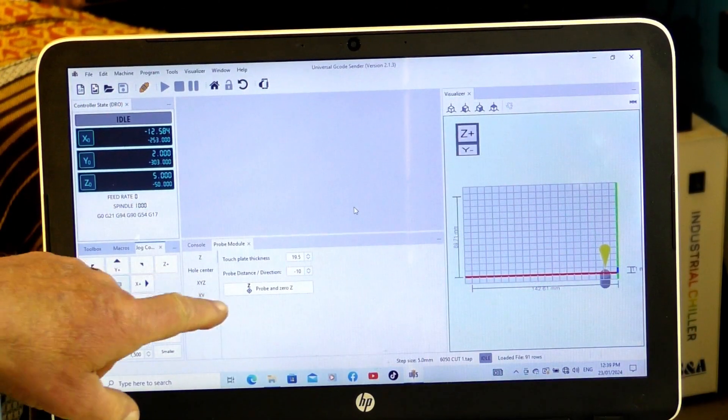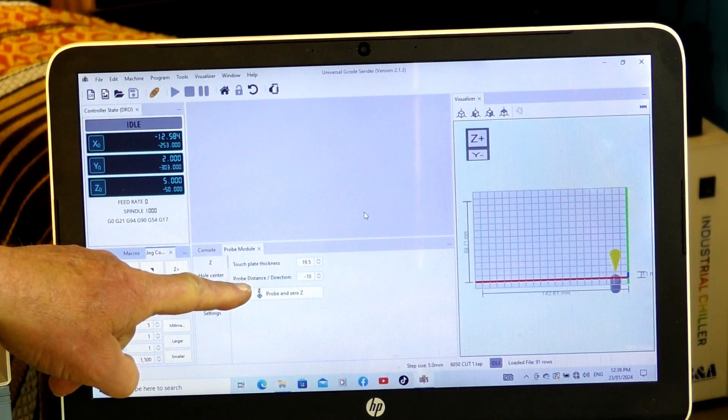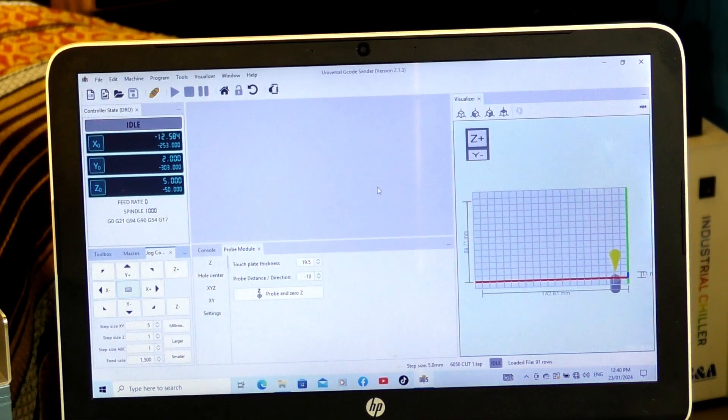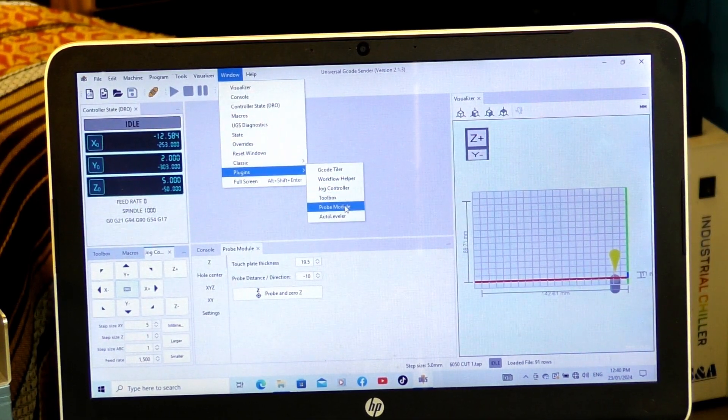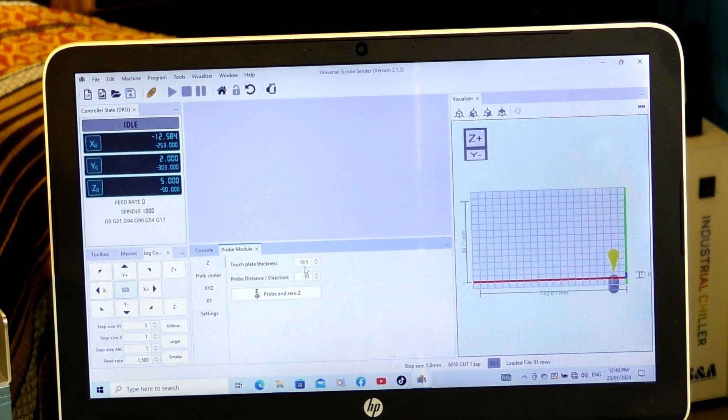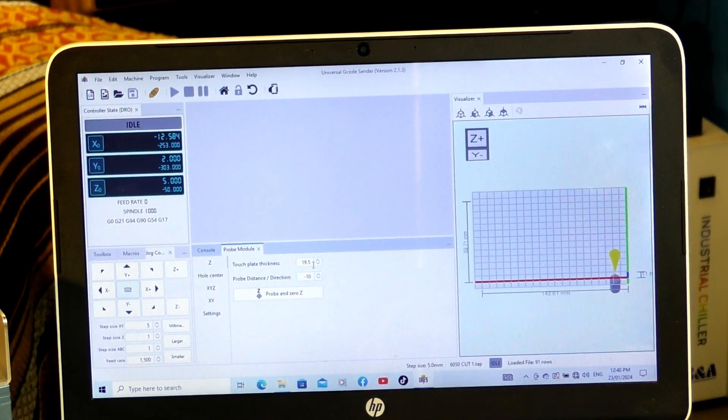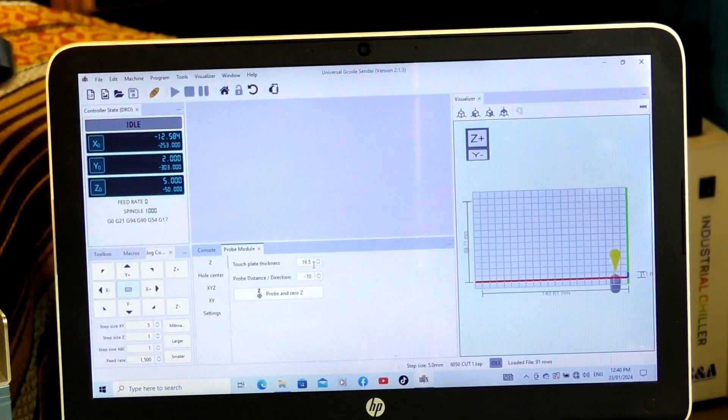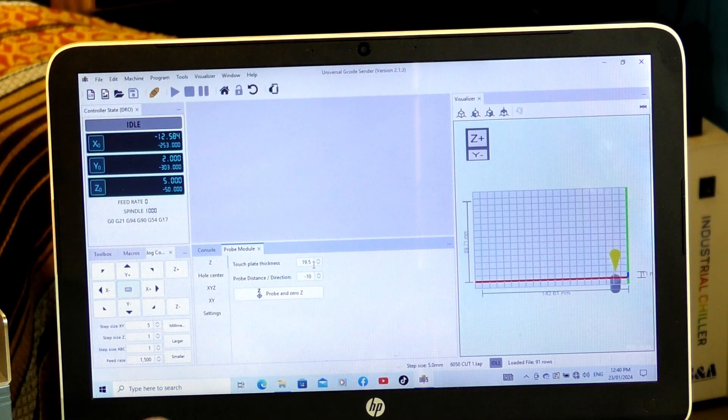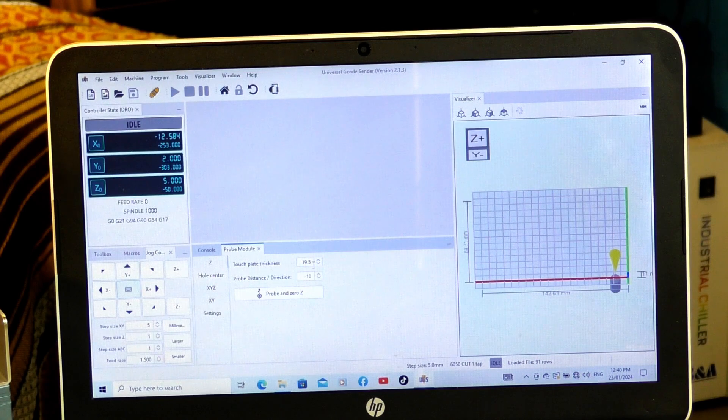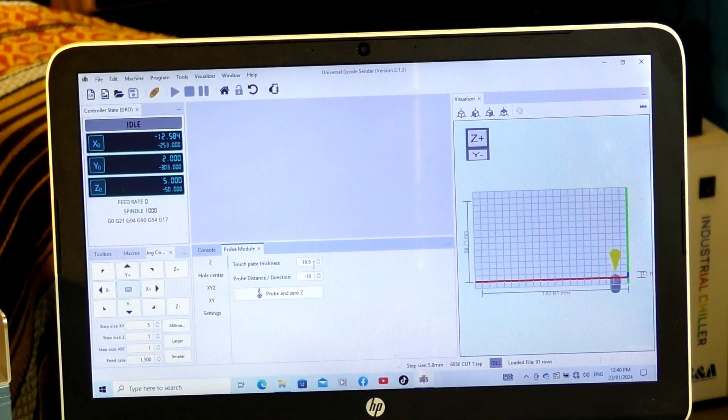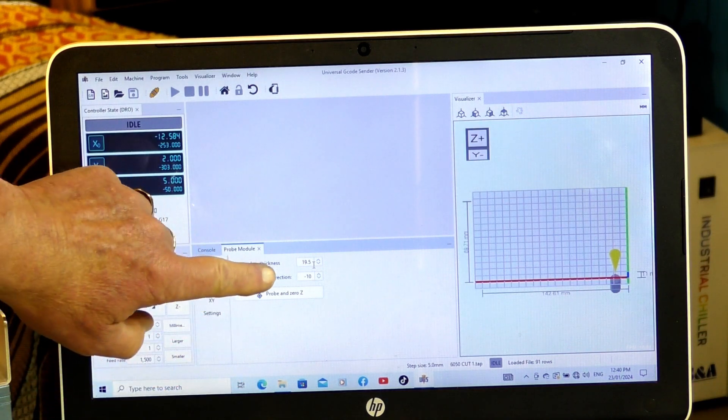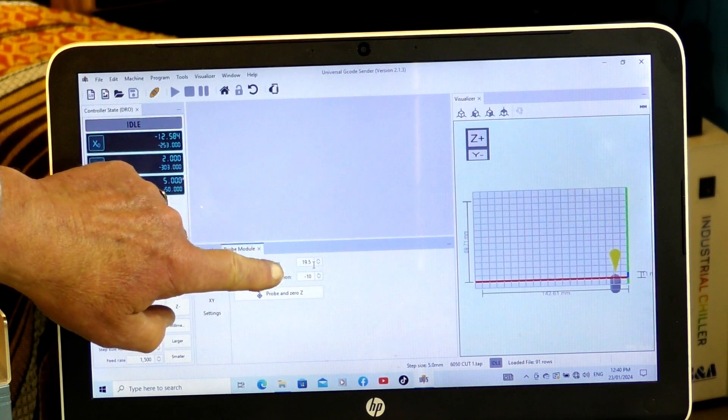You'll notice here I have the probing module open in UGS. To open that, if it's not on your screen, you just come up here to Window and come down here to Plugins, and there it is there. Just click that and it will appear on your screen. Now I've got 19.5 set there—that is the thickness of my puck. That's where you put that figure there. And the figure below it, which is minus 10—what that's telling UGS is to go and look for the puck on top of the work but only travel down 10 millimeters and then stop. So that's the recommended figures that I would put. Obviously, you have to measure your own Z-zero puck and put the figure in there.